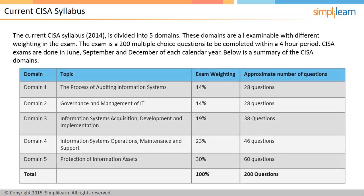Domain 1 covers auditing information systems and accounts for 14% of the CISA exam. Domain 2 covers governance and management of information technology and accounts for 14% of the CISA exam.